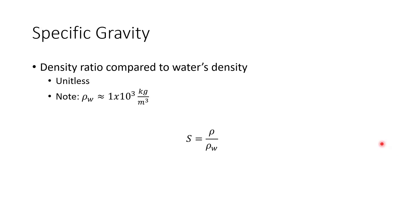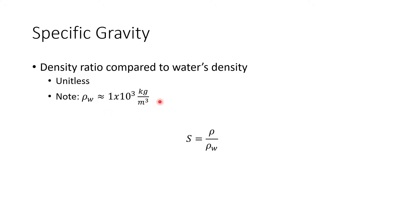Specific gravity is also another property that you could calculate from the density. Specific gravity is a density ratio compared to water's density. So S, specific gravity, is the ratio between the density, or rho, of the material divided by rho of the water. Rho of water is approximately 1 times 10 to the 3rd kilograms per cubic meters. If you want a precise value, you need to look it up in the table, and the lab is going to ask you to do that.